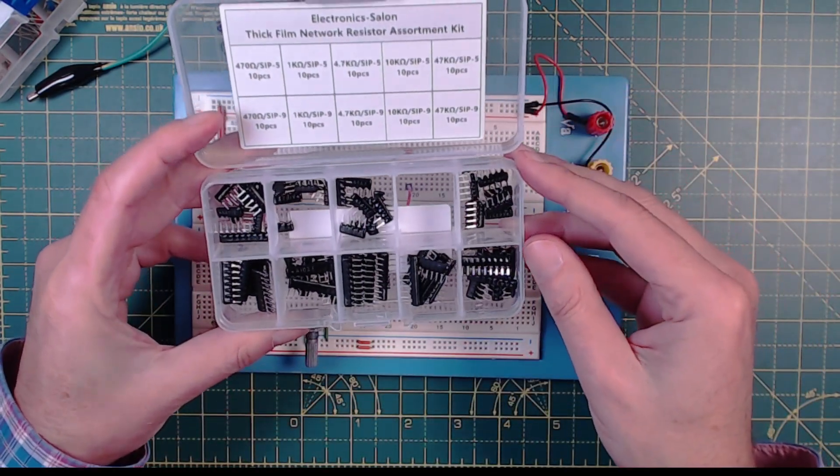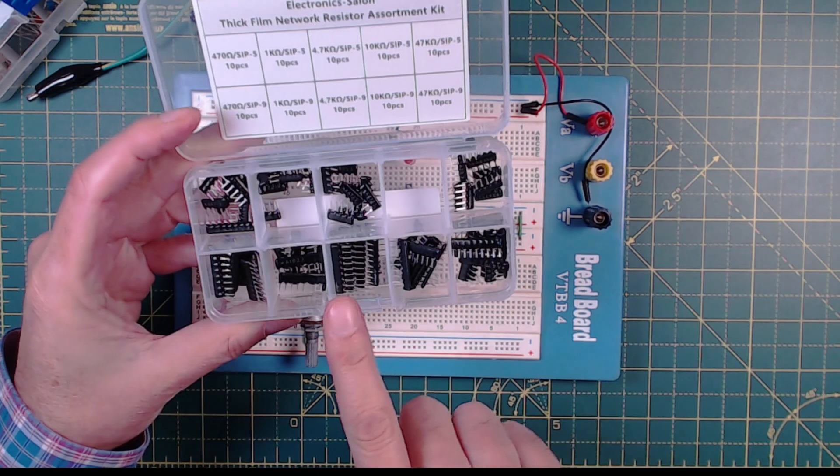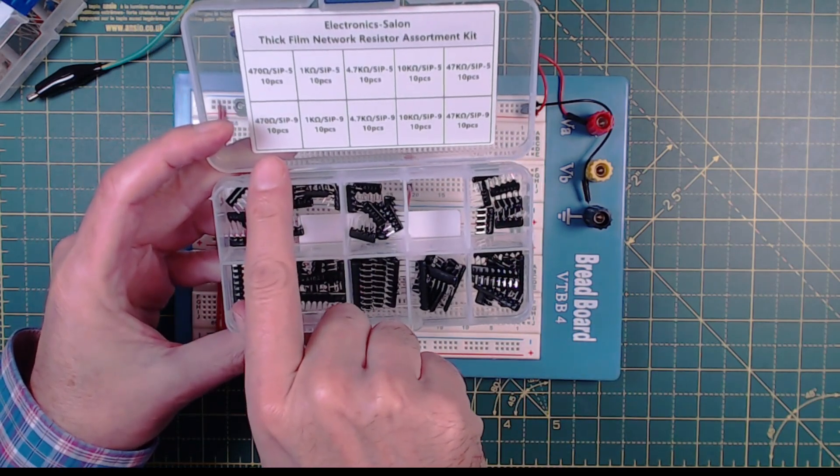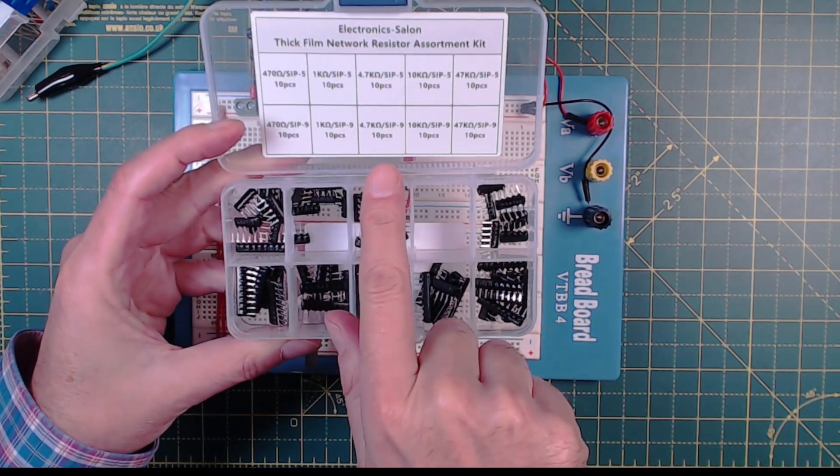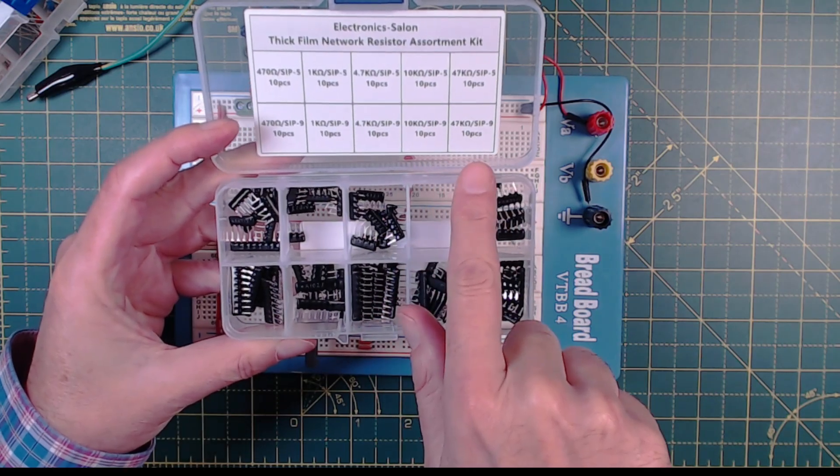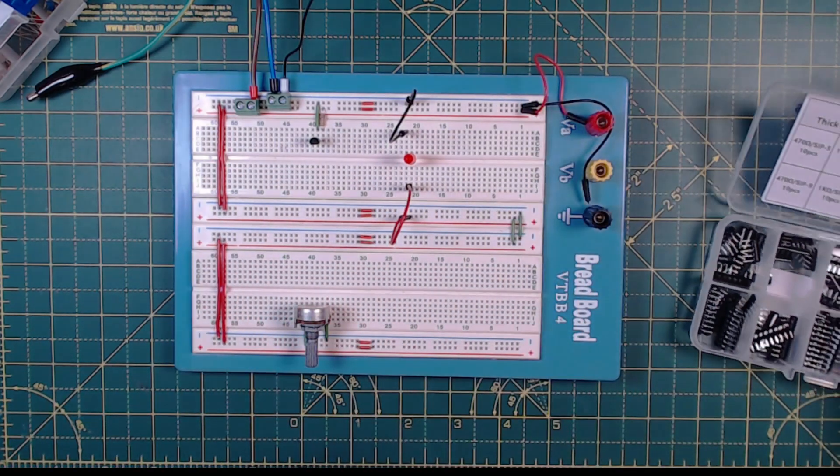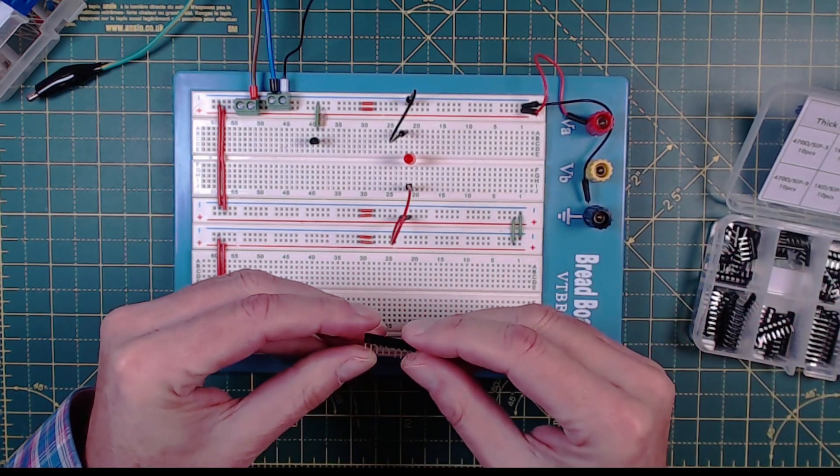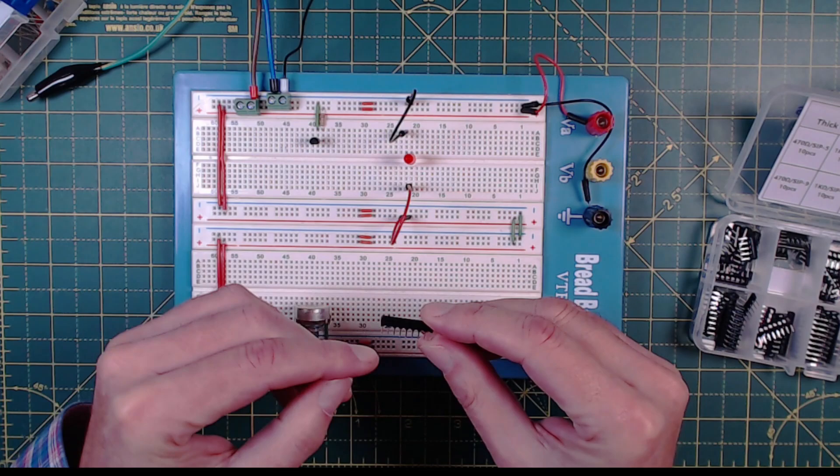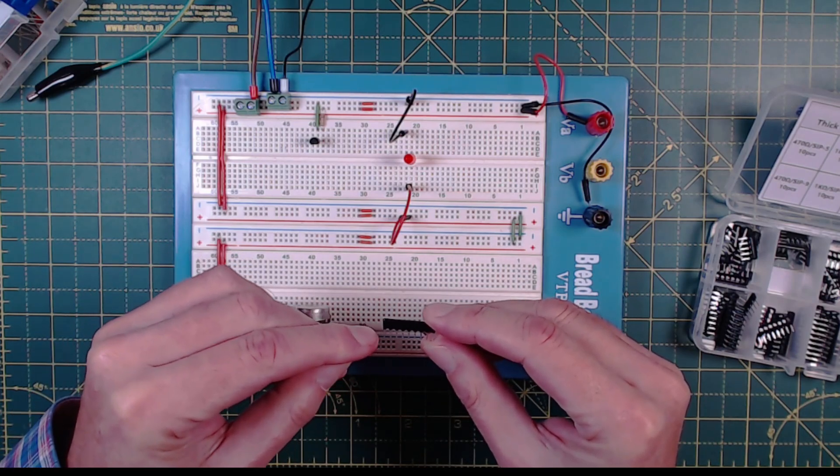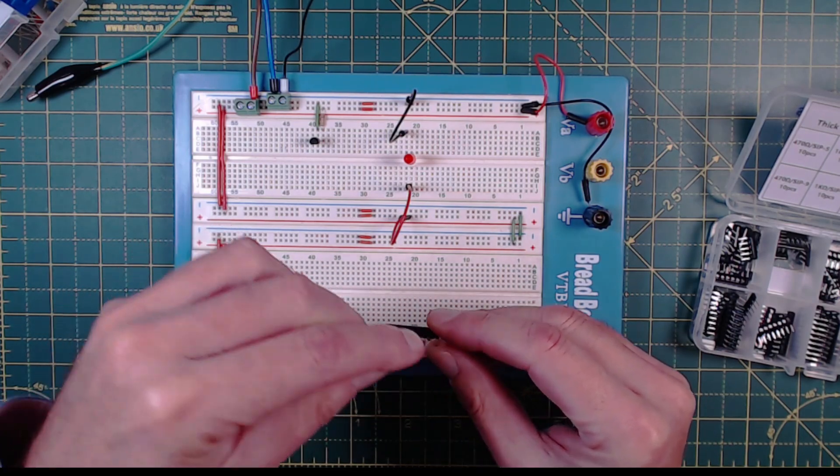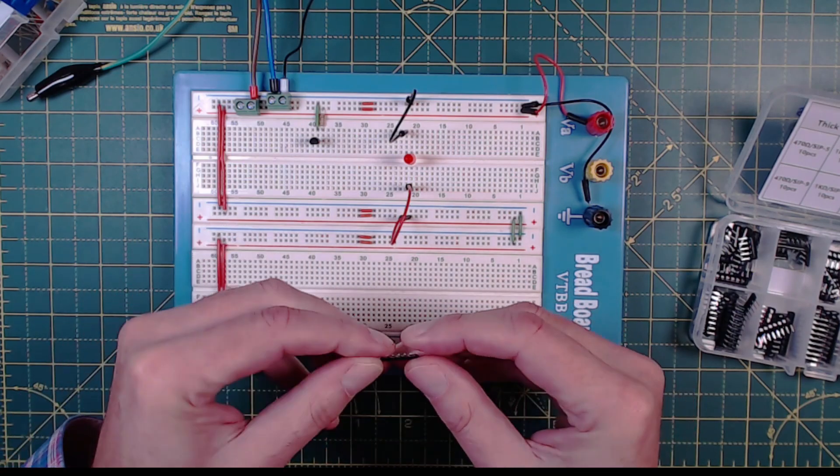But the tip really is get yourself some resistor packs. These are resistor packs. So let's pick we've got 470 ohms, 1 kilo ohm, 4.7k, 10k and 47k. So if I pick this 1k here what happens is one of the pins is ground and then there's effectively a 1k resistor to the next pin and a 1k resistor to the next and a 1k resistor to the next.